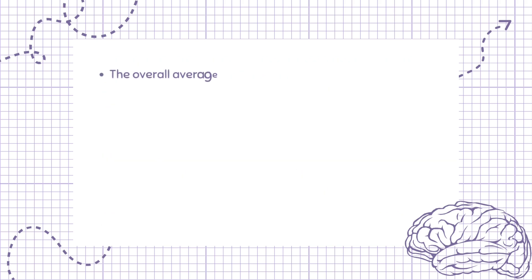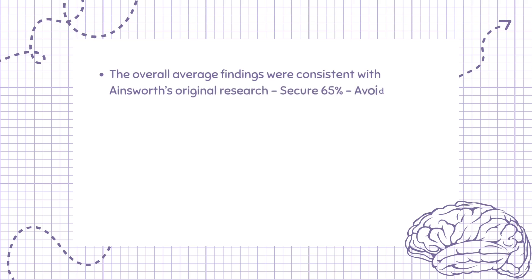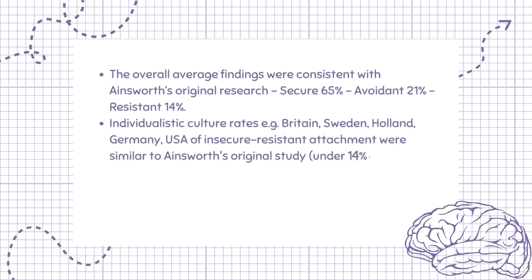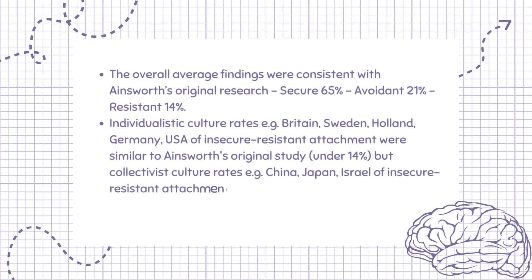The overall average findings were consistent with Ainsworth's original research: secure 65%, avoidant 21%, resistant 14%. Individualistic culture rates — e.g. Britain, Sweden, Holland, Germany, USA — of insecure-resistant attachment were similar to Ainsworth's original study, under 14%, but collectivist culture rates — e.g. China, Japan, Israel — of insecure-resistant attachment were not similar, above 25%.